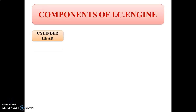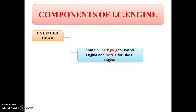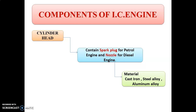The next component is the cylinder head. The cylinder head of the internal combustion engine consists of a spark plug for the petrol engine and a fuel injector or nozzle for the diesel engine. This cylinder head is made up from cast iron, steel alloy, or aluminium alloy.